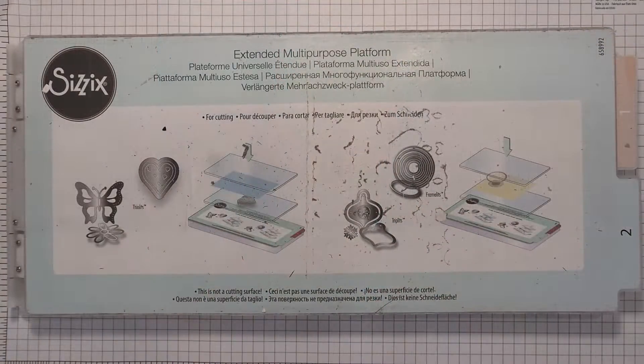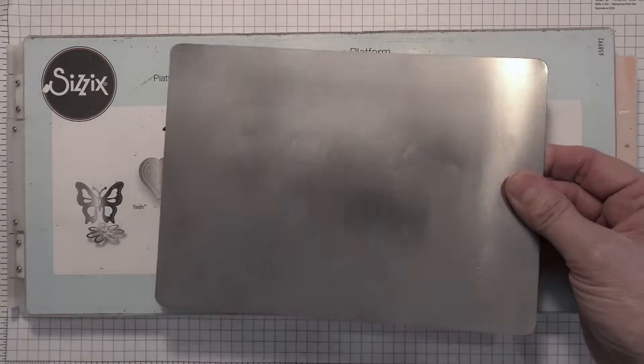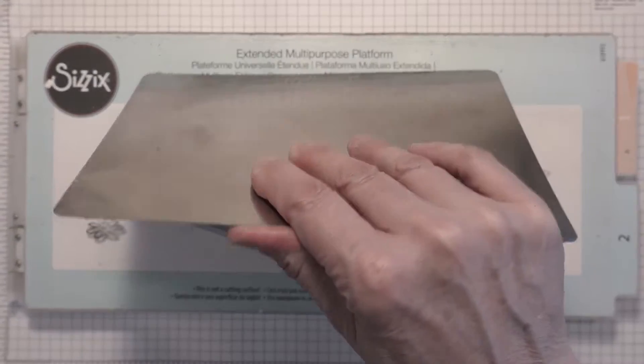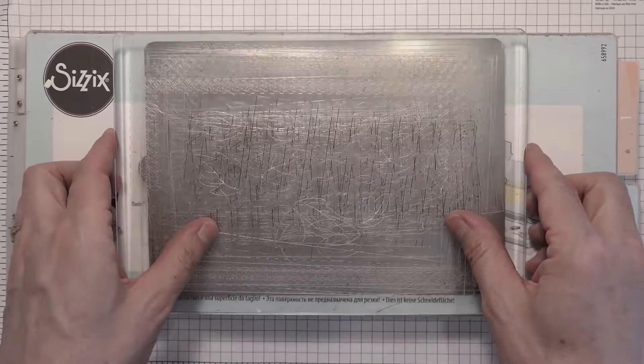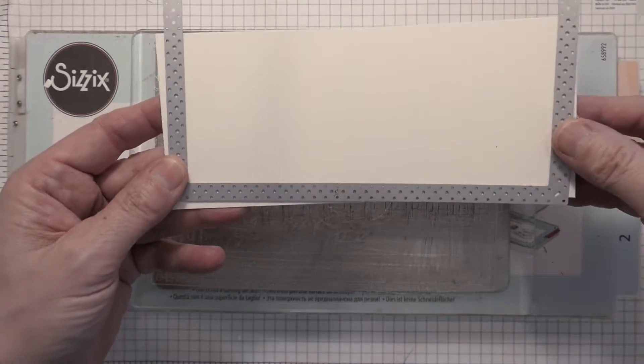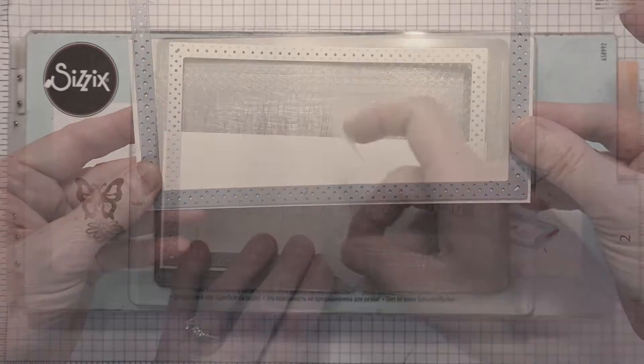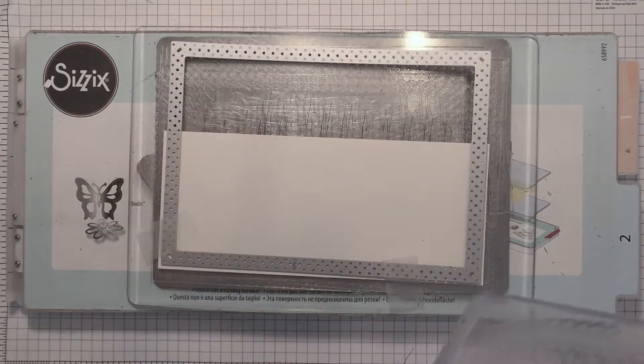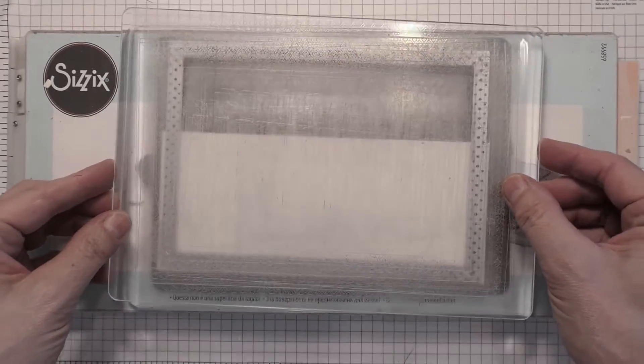But this hack that I'm about ready to show you has made it so that I can do a seamless frame smaller with my Big Shot. So let's get started. This is the shim that I could not find in yesterday's video. This is a little metal plate that just adds a little bit more cutting power to the Big Shot on these intricate dies.